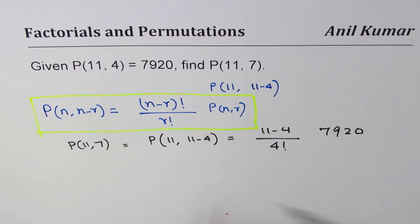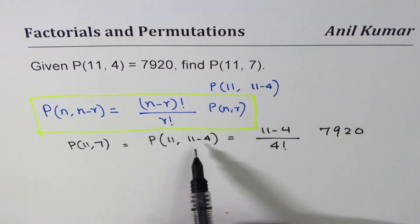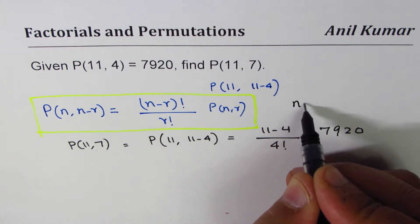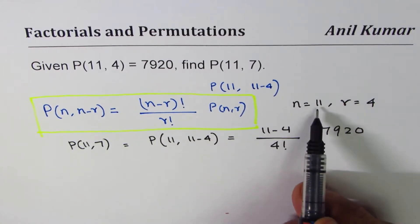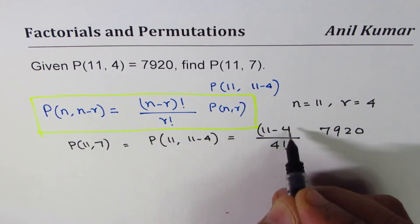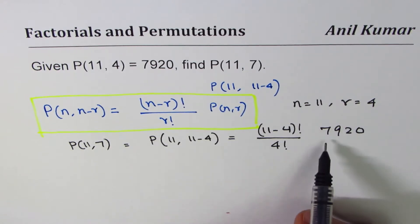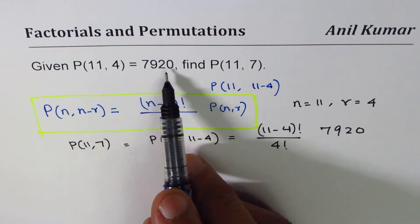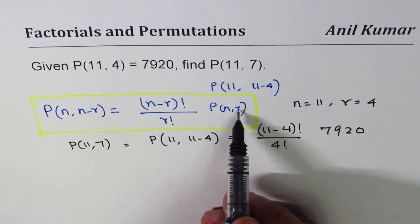You understand, so P(11,7), 7 could be written as 11 minus 4. n is 11, and r equals 4. Substitute 11 for n and 4 for r, so we get (11-4)! divided by 4 factorial times P(n,r) which is 7920.